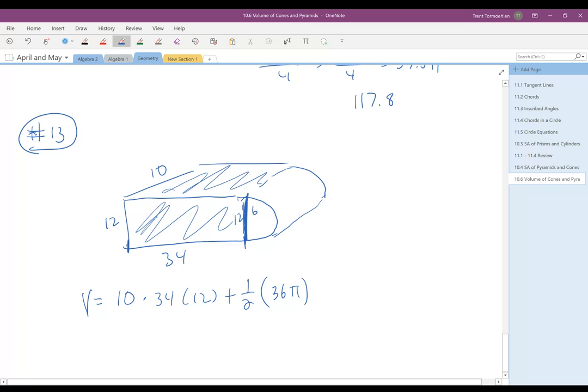6 squared pi. And so that gives you the area of the base as if this was a full cylinder. And then you multiply times the height, which is the distance between the two bases. And so if this is one base, the other is over here. So the height is just 10.